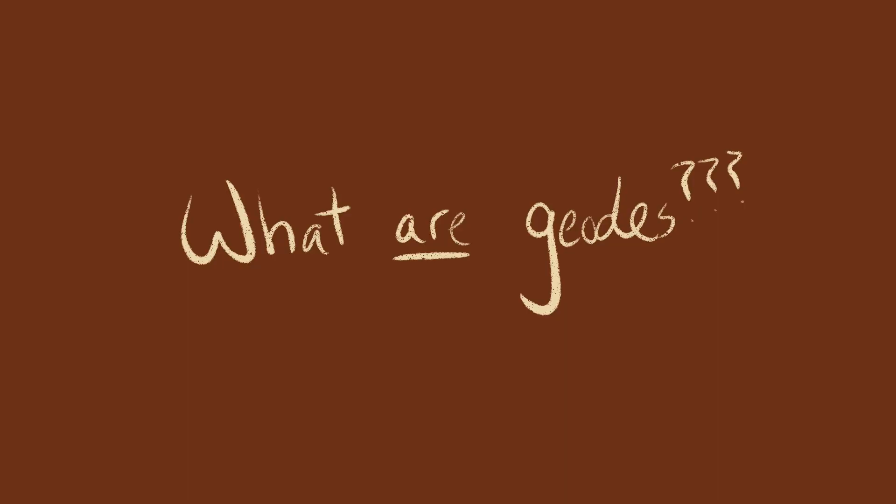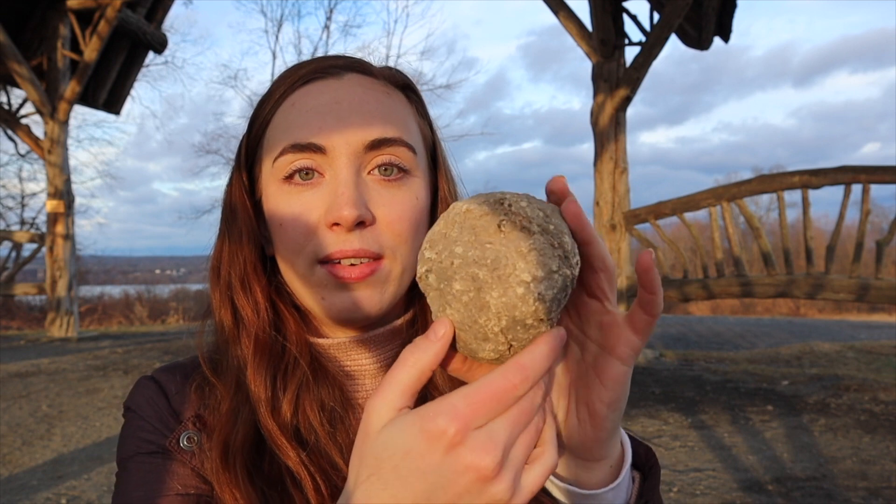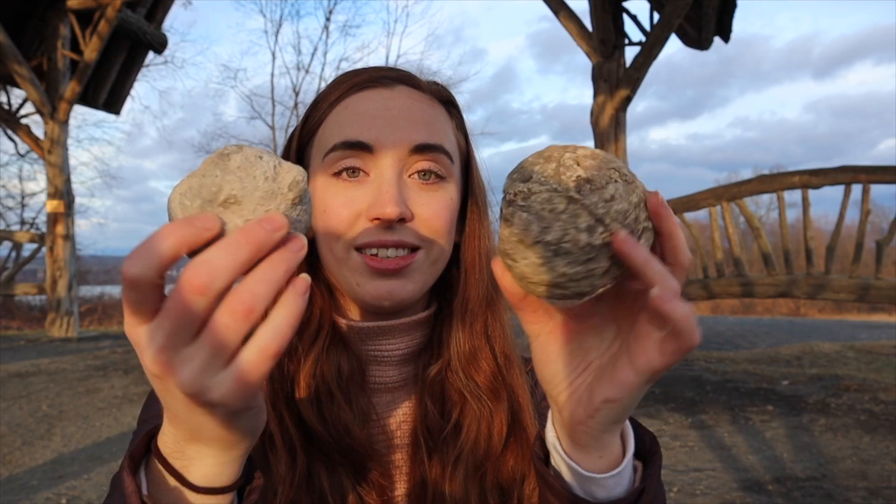So first of all, what are geodes? Geodes are rounded or sub-rounded pieces of rock that have a hollow cavity inside that are partially filled in with minerals. The rock that this geode was in — the rock formation — had formed before the minerals precipitated in that hollow space.